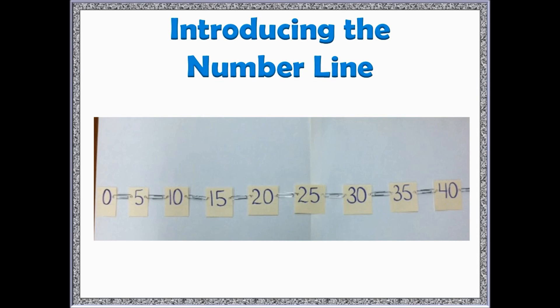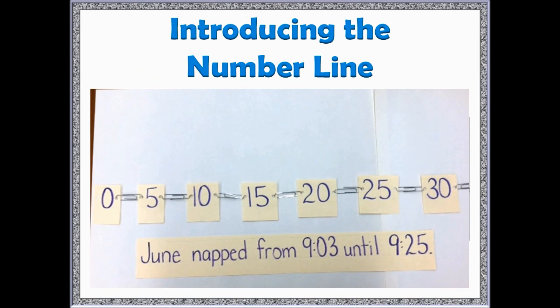Here is an example of a student solving a problem using this number line. The problem says, June napped from 9:03 until 9:25 and the student is trying to determine the length of June's nap. The student starts by recording 3 and does a hop of 2 to get to a friendly, easy to work with number. Then the student continues to do hops of 5 until reaching the end time of the nap.